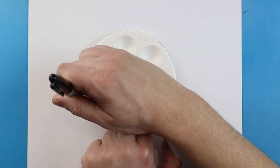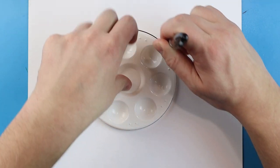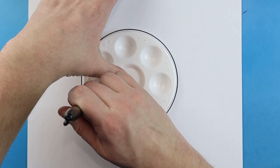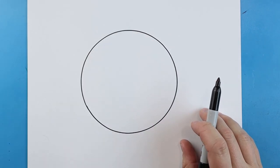The first thing I want to do is trace right around here. I'm going to use my marker. I'll use my little paint tray as a guide and I'll make a nice little circle.